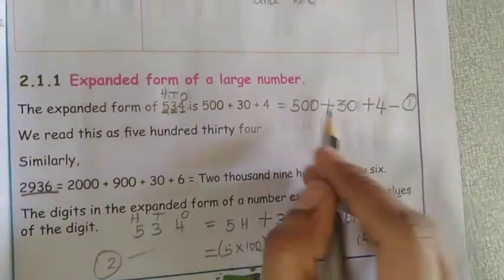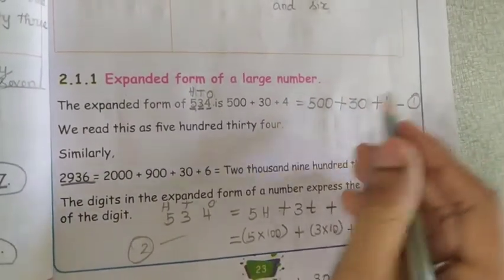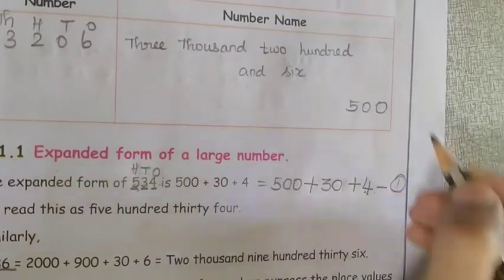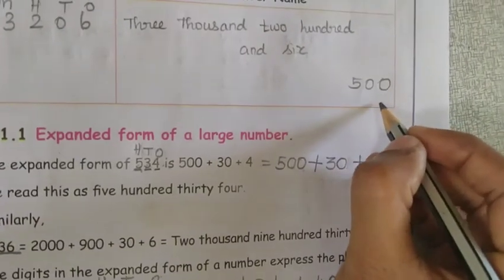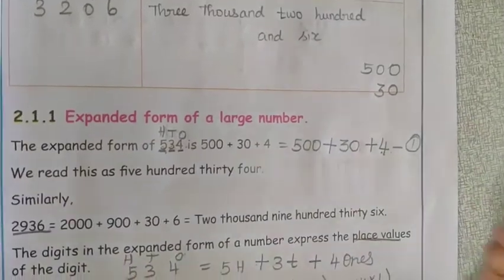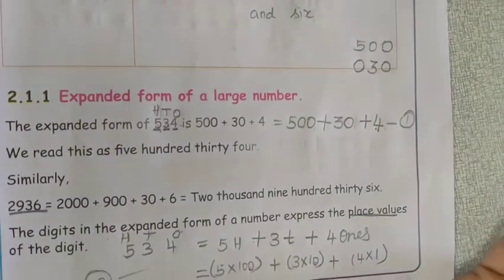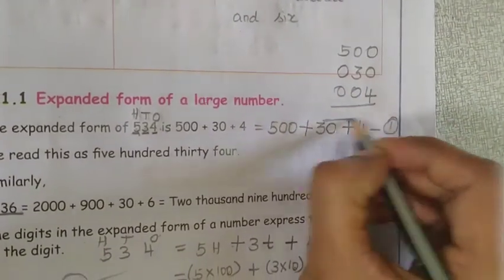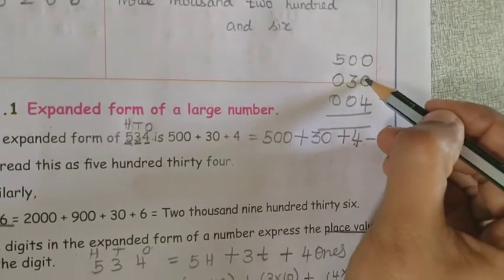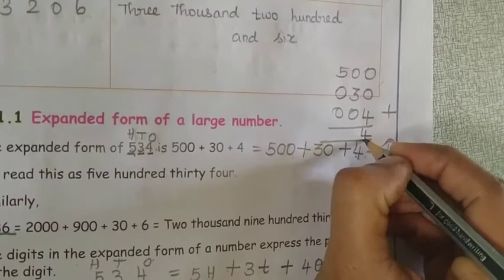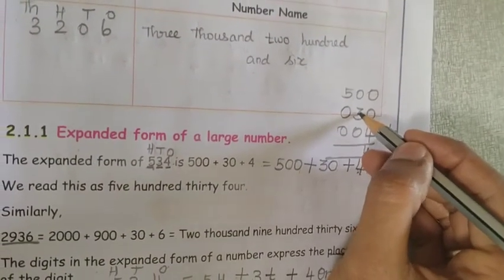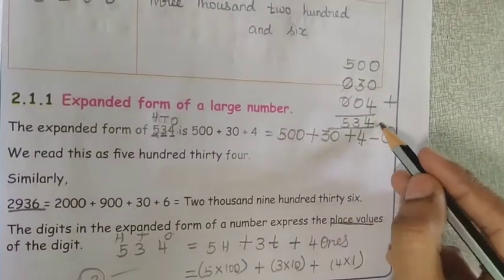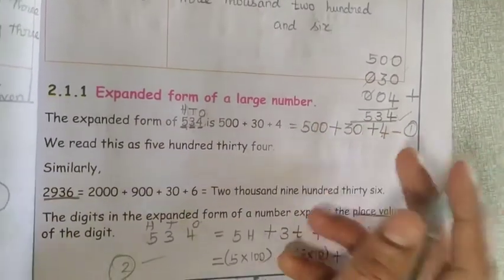If you write the exponent form, just add the three numbers: 500 plus 30 plus 4. Arrange them: 500, then 30 below (0 in ones, 3 in tens, 0 in hundreds), then 4 (in ones place). Do the addition: 0+0+4=4, 0+3+0=3, 5+0+0=5. So the answer is 534. Your addition answer and question are the same — your exponent form is correct.